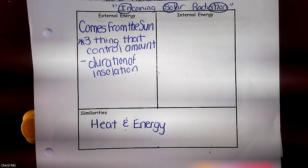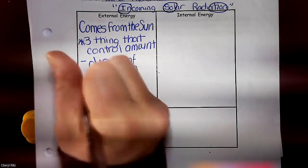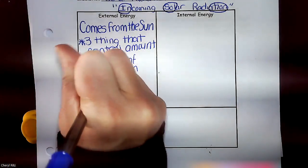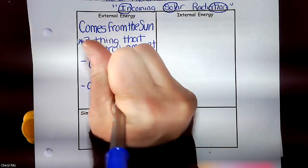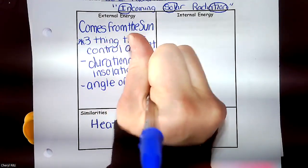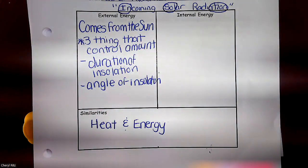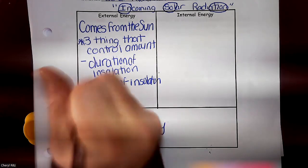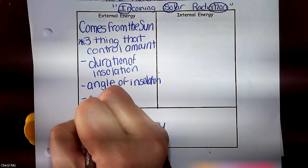I only had one of the three causes up — the three things that affect the amount of energy we receive. What's another one? The angle of insolation, which just means how high the sun is in the sky. And there was one more that controls how much energy we receive from the sun.